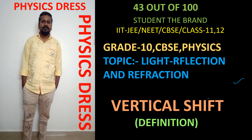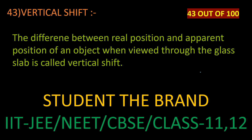Hello, welcome to the Story in the Brain. Today's topic is vertical shift. So what is vertical shift? The difference between the real position and apparent position of an object when you look through a glass slab is called vertical shift.